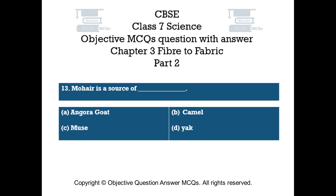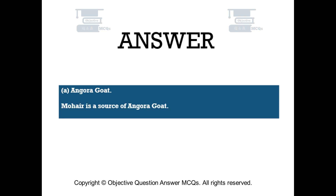Question number 13. Mohair is a source of — Option A: Angora goat. Option B: Camel. Option C: Muse. Option D: Yak. The right answer is Option A — Angora goat. Mohair is a source of Angora goat.